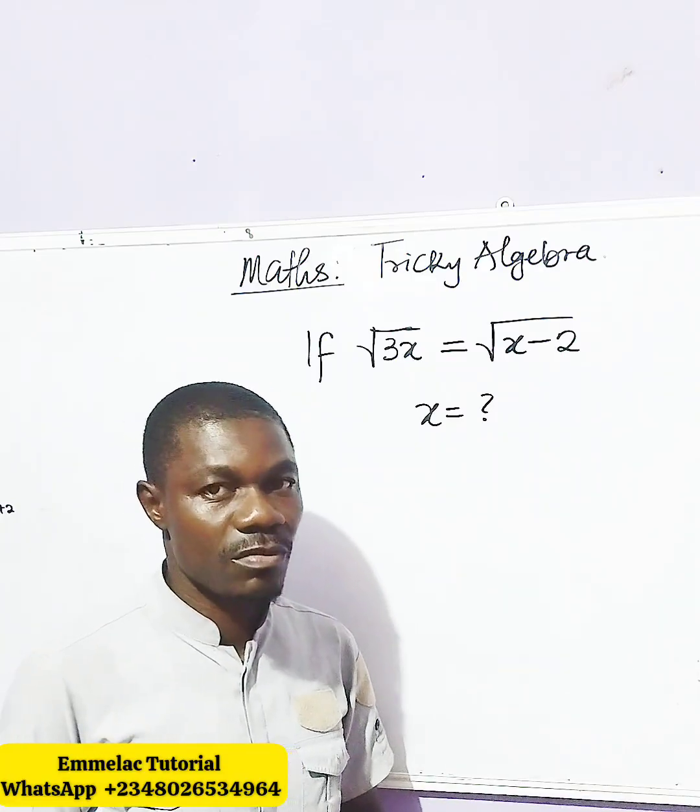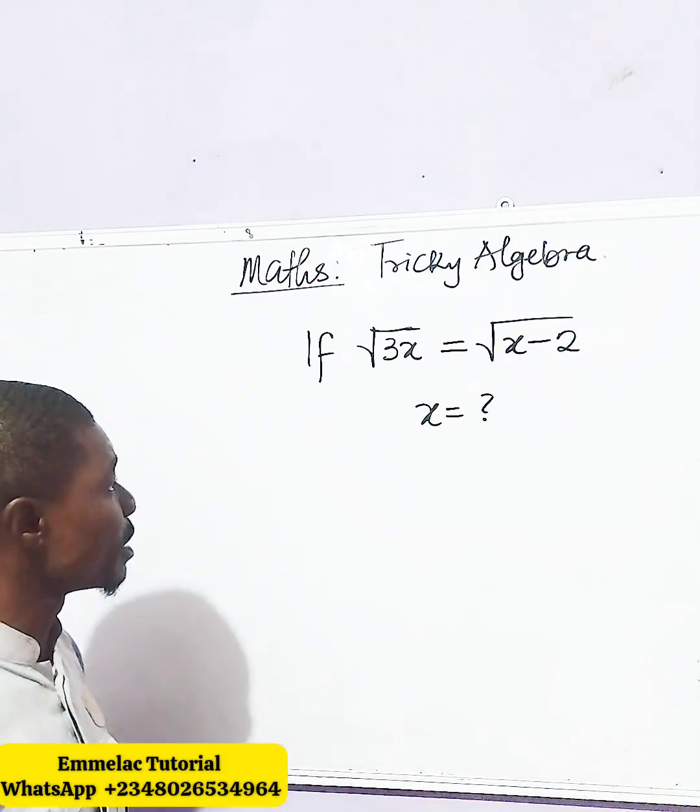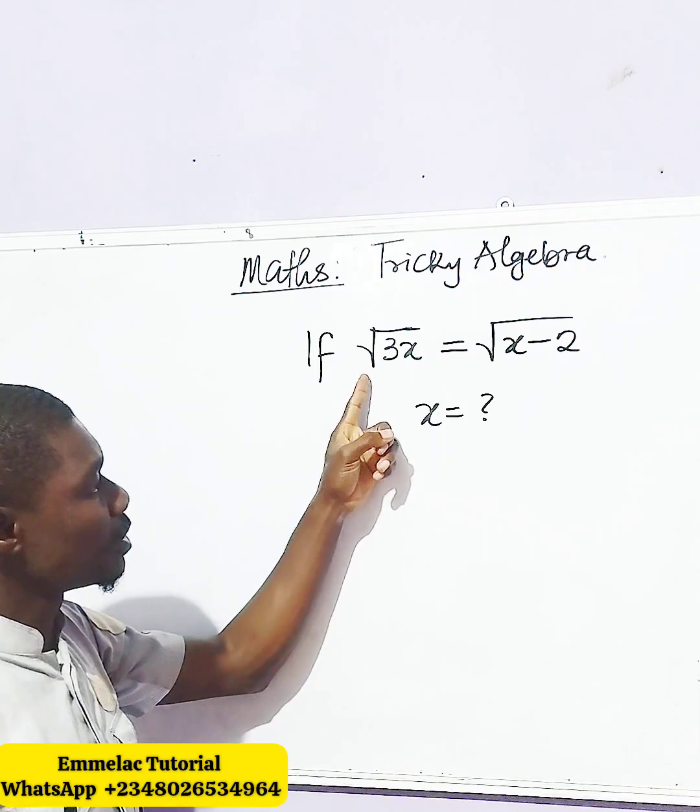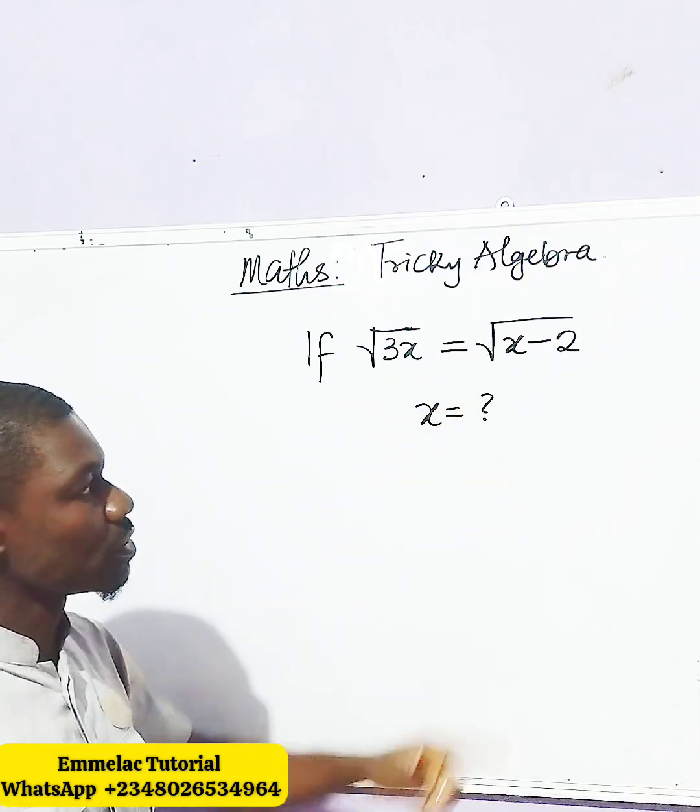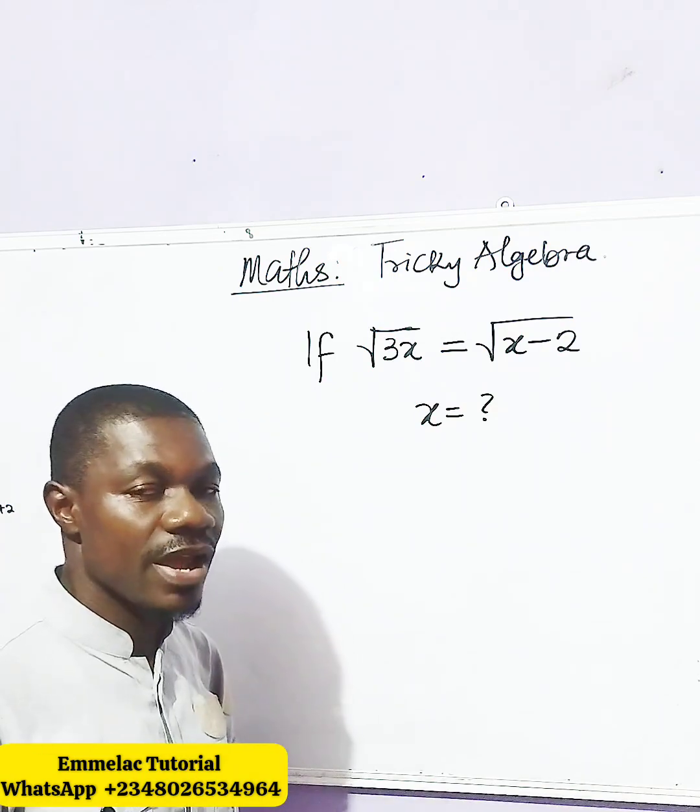Welcome to Emelike online tutorial. Now before us is this tricky algebraic question and it says that if the square root of 3x equals the square root of x minus 2, find x.